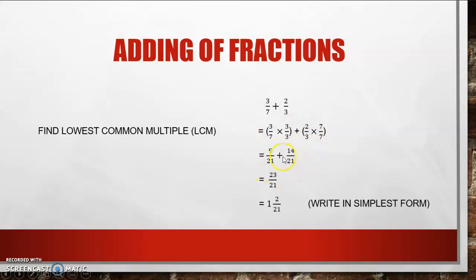If I add them together, I only add my numerators. I do not add my denominators — I only add my numerators — and 9 plus 14 will give me 23 over 21. Now as you can see, this is an improper fraction and I need to make it a mixed number. So how many 21ths will you find in 23? There is one 21 and I am left with two 21ths.